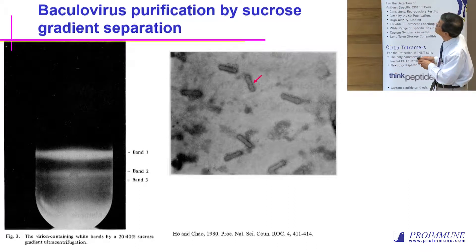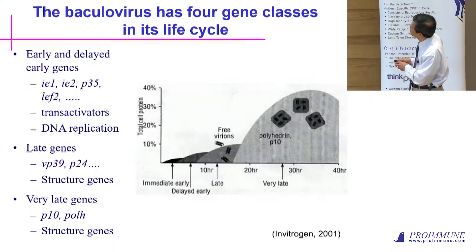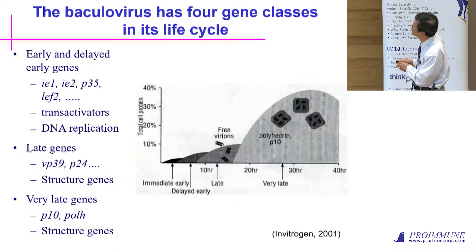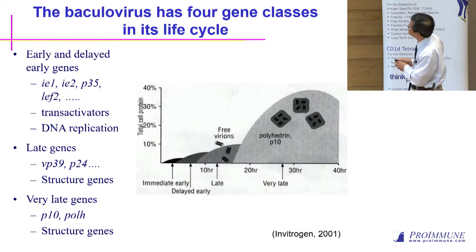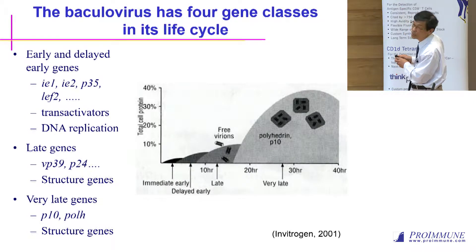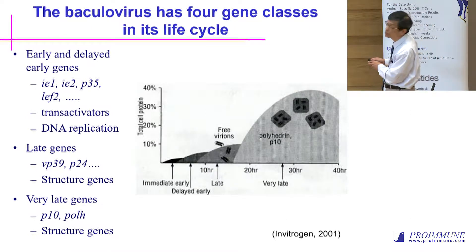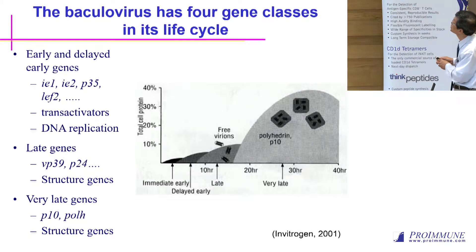Baculovirus has four gene classes in their life cycle. Once the virus enters the cell, it will generate so-called immediate early genes, which can stimulate gene expression right away without the assistance of other viral gene products. At the late stage, virus can be budding out. However, baculovirus can go further and produce a protein called polyhedrin, which embeds virus particles to protect them. The level of gene expression is extremely high compared with immediate early genes. Therefore, we can use baculovirus with this promoter for large-scale protein production.